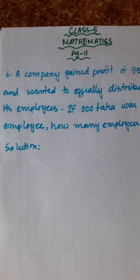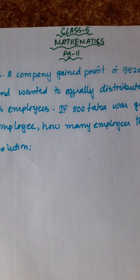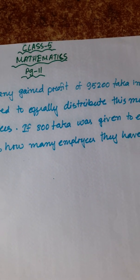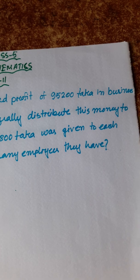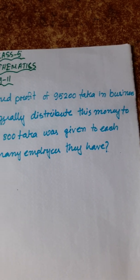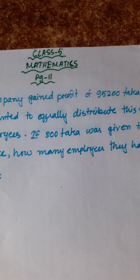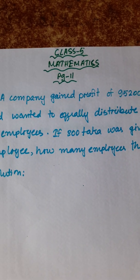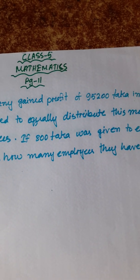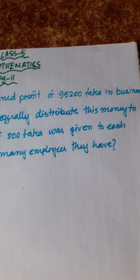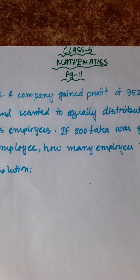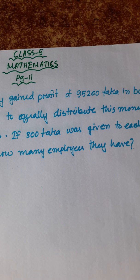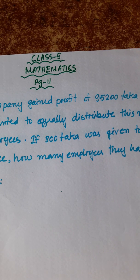So, the question of number 6 is: a company gained a profit of 95,200 dhaka in business and wanted to equally distribute this money to its employees. If 800 dhaka was given to each employee, how many employees do they have? So, the question is, a company has 95,200 dhaka profit.